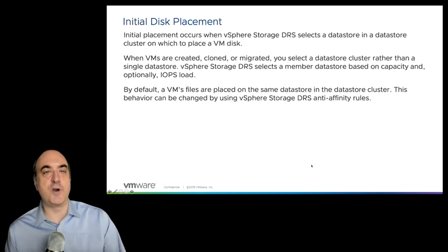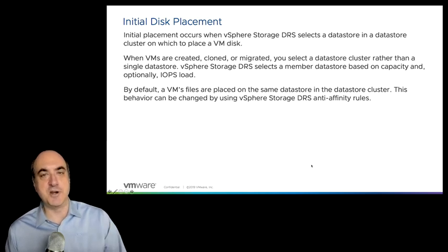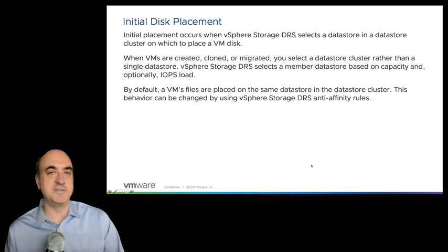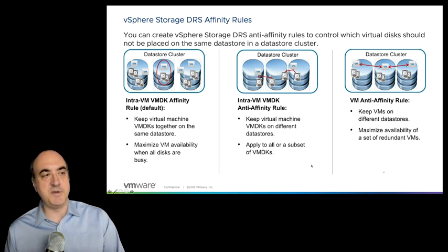Initial placement occurs when you create a VM — not when you power it on. Whether creating from scratch, cloning, or deploying from a template, you choose the data store cluster and the cluster selects the data store. By default, all VM files get placed in the same data store — an intra-VM VMDK affinity rule — so a VM's boot drive and data drive are in the same data store within the cluster unless you specify otherwise.